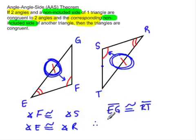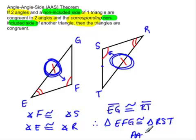Therefore, triangle EFG is congruent to triangle RST. And that is by angle-angle-side. So two more shortcuts that we can use to prove triangles are congruent. So let's really put that into practice.